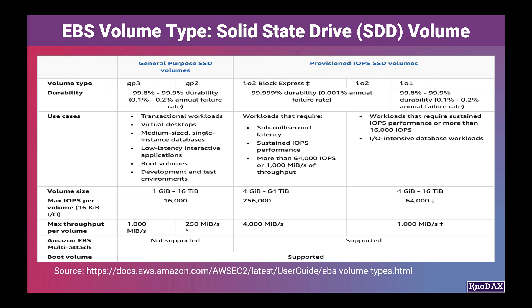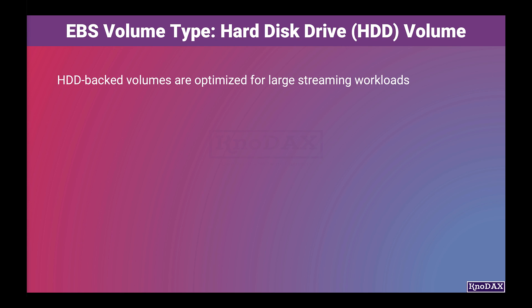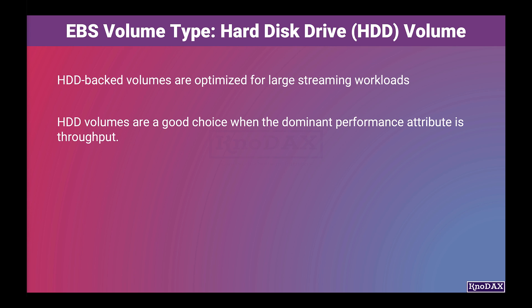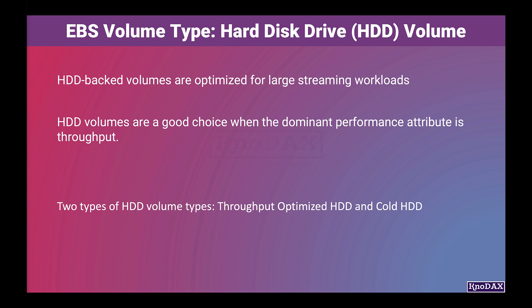Now let's talk about hard disk drive HDD volumes. HDD-backed volumes are optimized for large streaming workloads. HDD volumes are a good choice when the dominant performance attribute is throughput — not IOPS as in the case of SSD-backed volumes. There are two types of HDD volume types: throughput-optimized HDD and cold HDD.